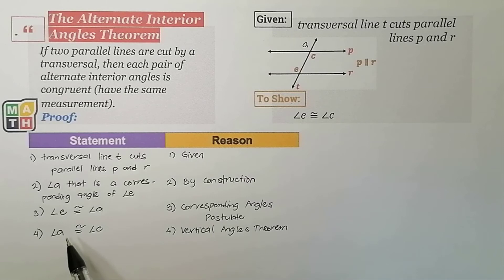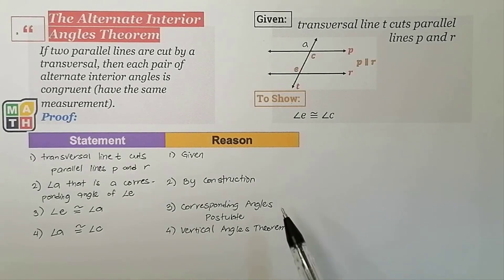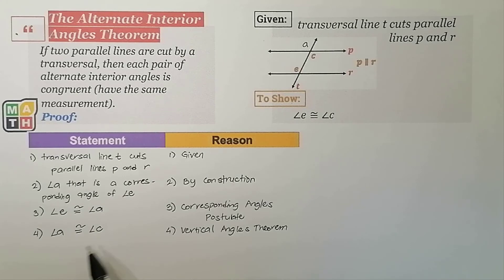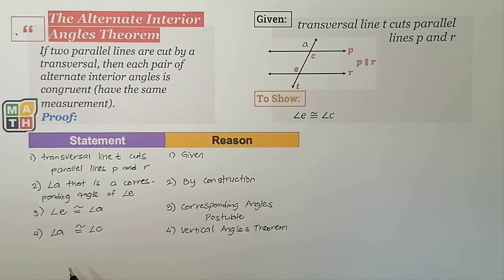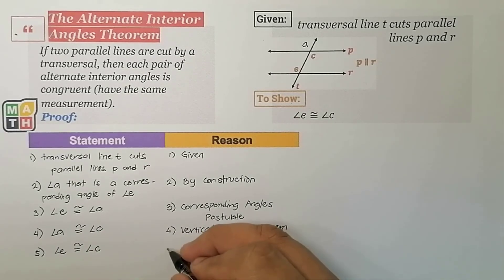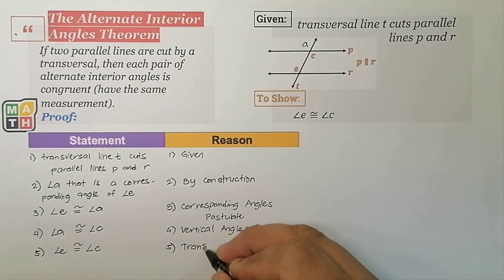We can now see how the fifth statement follows, since we have statement 3 — Angle E is congruent to Angle A — and statement 4 — Angle A is congruent to Angle C. We have a common angle A, so we can use the Transitive Property to declare the relationship of the other angles. Therefore, number 5 states that Angle E is congruent to Angle C, again by the Transitive Property.